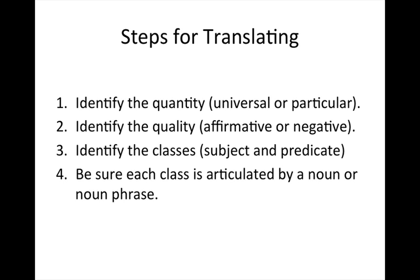Here are the steps that we're going to go through. You don't necessarily have to do them in this order, but it helps to give you a step-by-step sequence for taking ordinary language sentences and translating them into standard form. You could start by identifying the quantity of the proposition — is it universal or particular? Then identify the quality — is it affirmative or negative? Then identify the classes, that is the subject and predicate class, and make sure that each class is articulated as a noun or noun phrase.